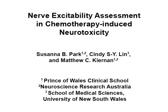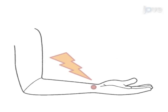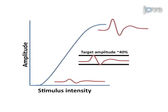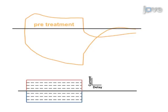The overall goal of the following experiment is to identify abnormalities in nerve function in patients undergoing chemotherapy treatment using axonal excitability studies. This is achieved by stimulating the median nerve at the wrist and recording compound sensory action potentials from the second digit, or compound motor action potentials from the abductor pollicis brevis muscle. A stimulus-response curve is produced to determine threshold current changes, tracked online using threshold tracking techniques. Multiple nerve excitability parameters are recorded in response to different stimulus patterns, assessing peripheral ion channel function and membrane potential to evaluate nerve function.